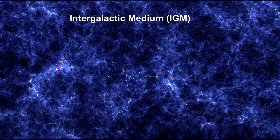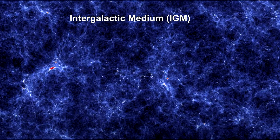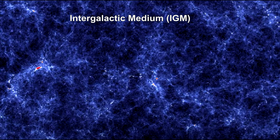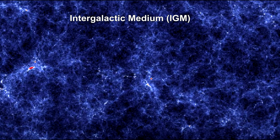The intergalactic medium contains roughly half of the normal matter in the universe. The average density is about one atom per cubic meter, or one atom per 35 cubic feet.